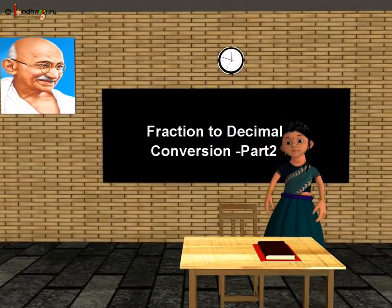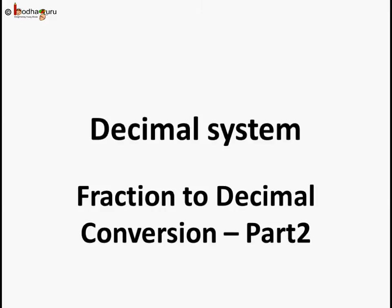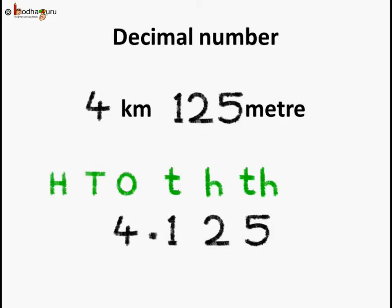Good morning children, now you know how to convert a fraction into a decimal number. As we saw in the example, 4 kilometers and 125 meters can be converted to a decimal number as 4.125 meters. As 1 kilometer is equal to 1000 meters, the decimal fraction part extends to the thousandths place. 4 goes to the ones place and it is followed by a decimal, then 1 goes to the tenths place, 2 goes to the hundredths place and 5 goes to the thousandths place.